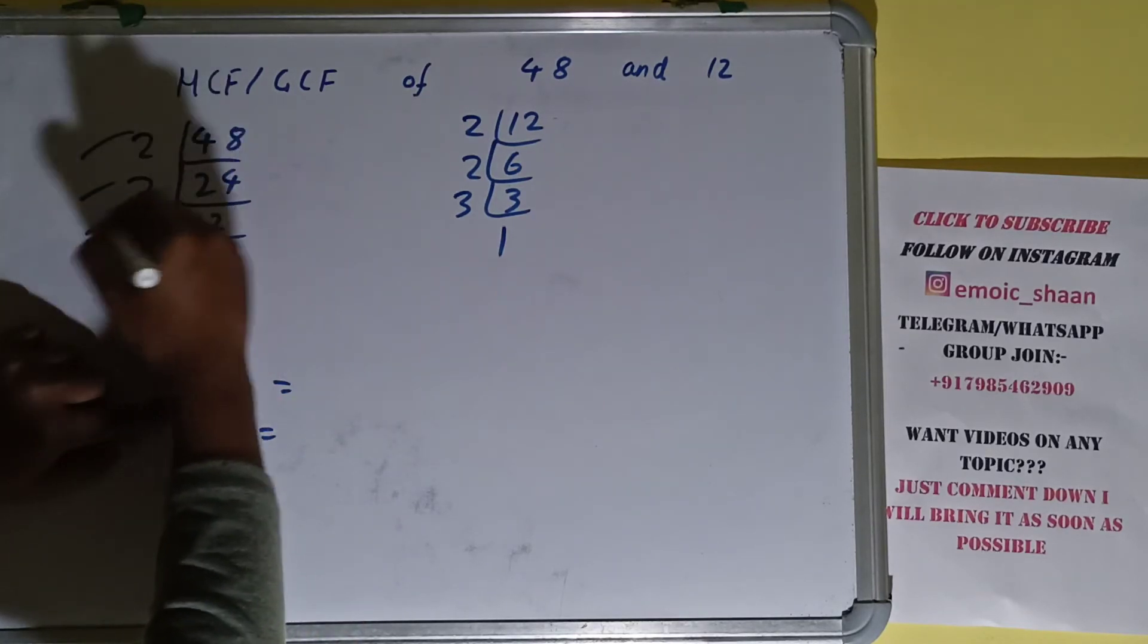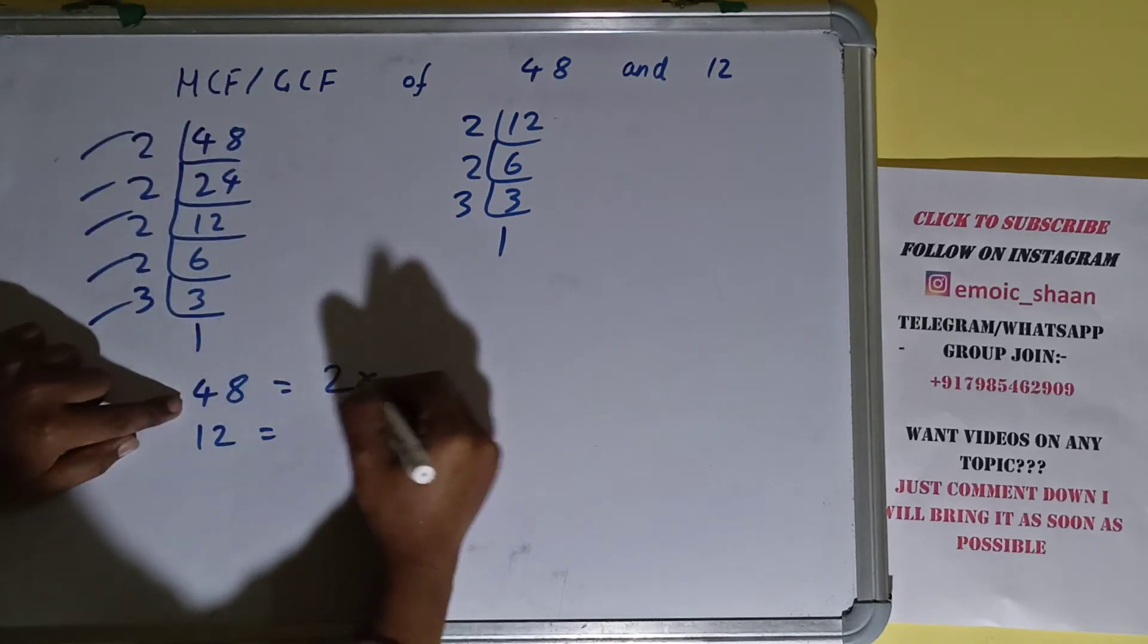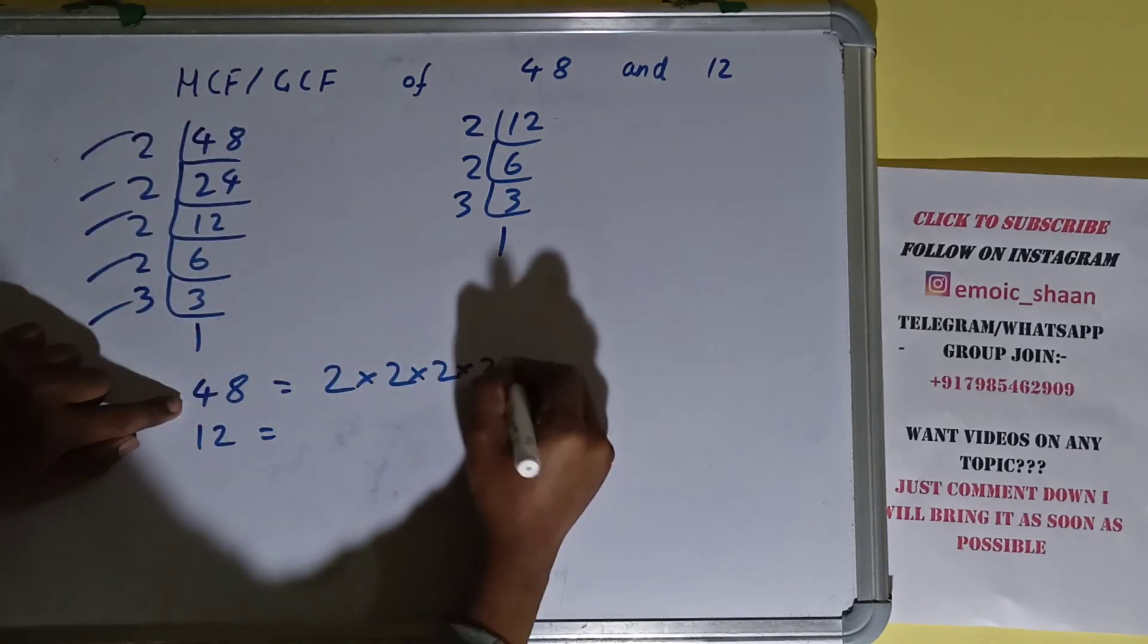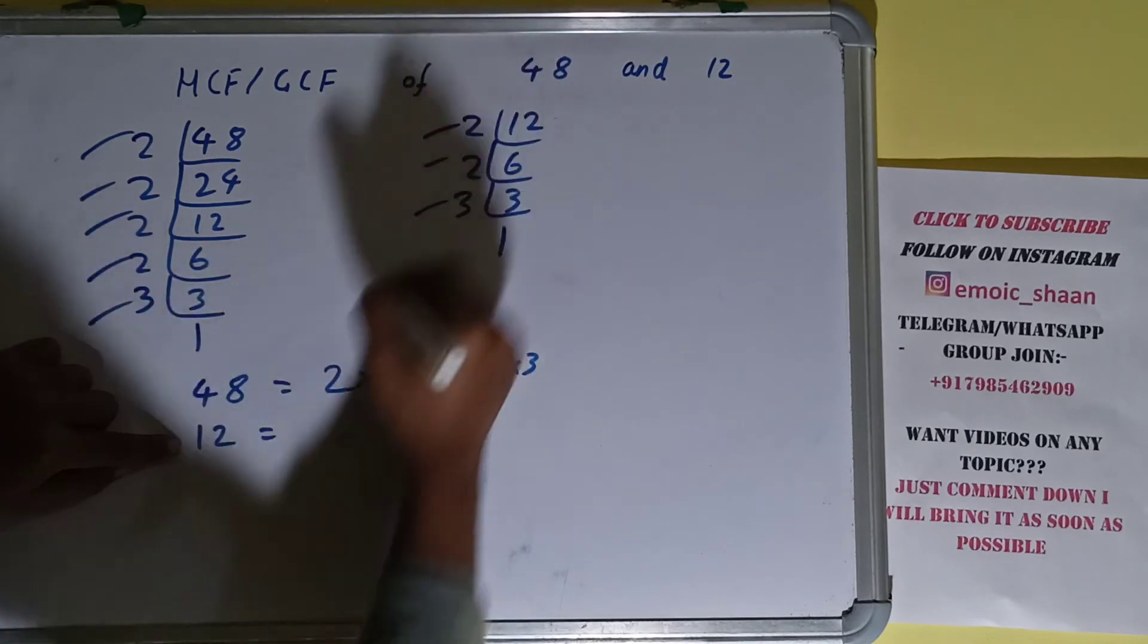2, 2, 2, 2, 3. For 12, what prime factors do we have? 2, 2, 3.